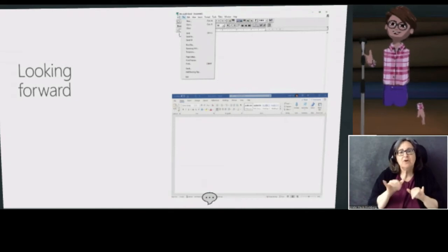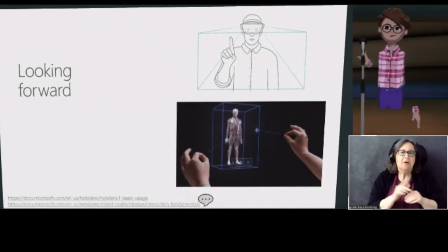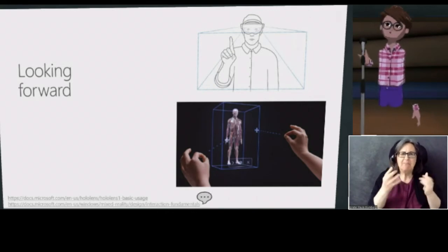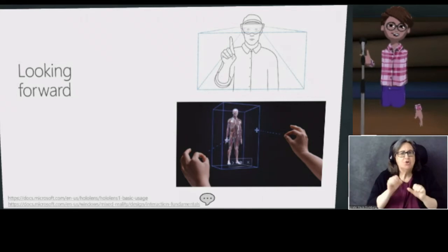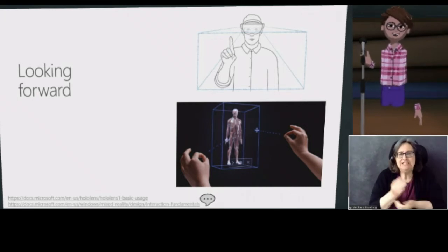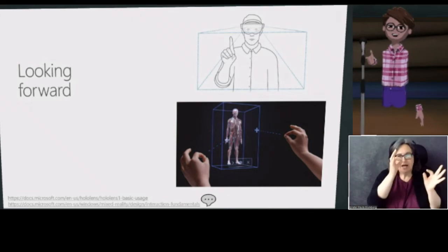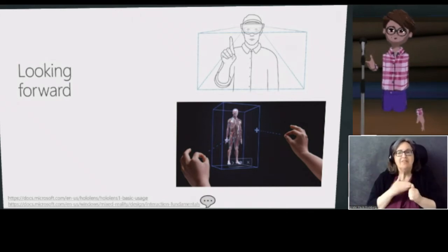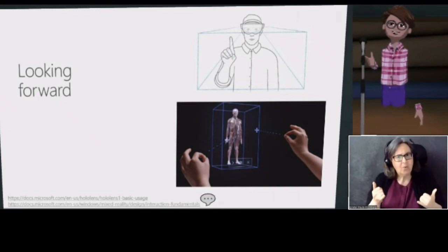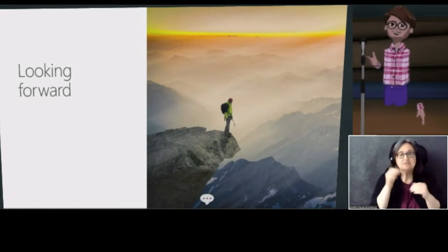Similarly for HoloLens, we had the gaze gesture voice paradigm that felt so amazing at the time, but it was nothing compared to articulated hands. And I think about that — it took many years to design intuitive UI. You can say what you want about the ribbon in Microsoft Word, but I find it much more accessible and approachable than searching for something in a menu. Similarly, I think we've improved on gaze gesture voice with articulated hands in HoloLens. And now with accessibility in VR, I think we're really at the Microsoft Word 6.0 stage — we're the vanguard of something new and exciting.